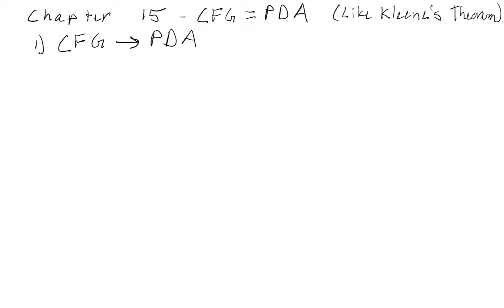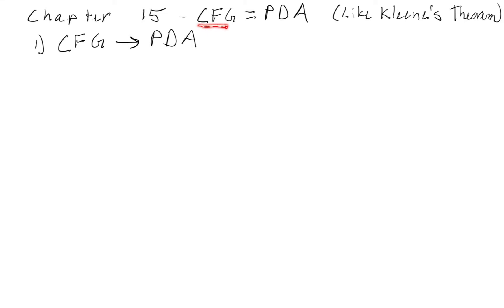With Kleene's Theorem, we had three different ways to define languages: regular expressions, finite automatas, and transition graphs. In this case, we only have two — a context-free grammar and a push-down automata. We also proved that every regular language can be defined with a context-free grammar, and we didn't need to prove it with a push-down automata because we can convert all finite automatas into a push-down automata. They're basically the same machine, except the push-down automata has a stack you can use. For finite automatas, you just ignore the stack and read the letters just like a finite automata would.